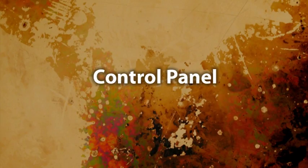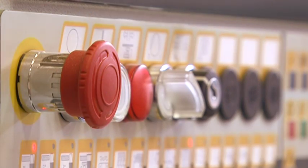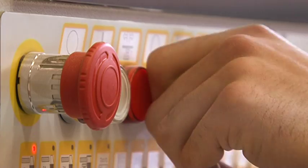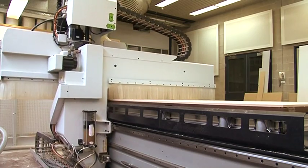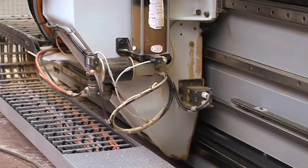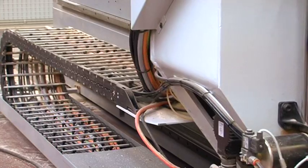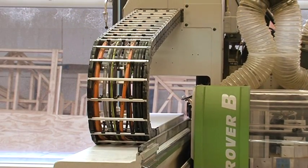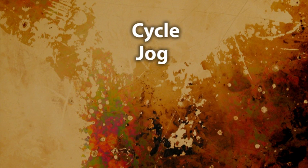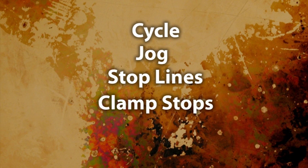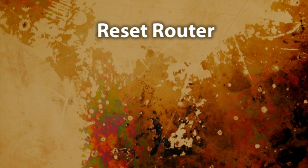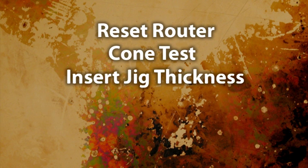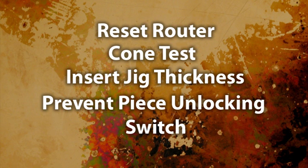Control Panel. The control panel is used to operate the machine. There are a number of buttons and indicators that turn on and off for different functions, including cycle, jog, stop lines, clamp stops, reset router, cone test, insert jig thickness and prevent piece unlocking switch.